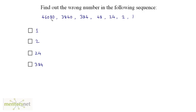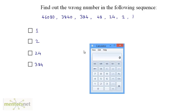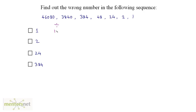Let's find the relationship between the first two numbers using a calculator. Dividing 46,080 by 3,840 gives 12 — so we divide 46,080 by 12 to obtain 3,840. For the next pair, dividing 3,840 by 10 gives 384.